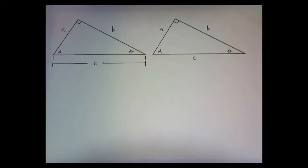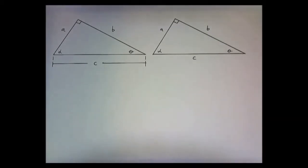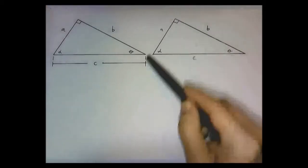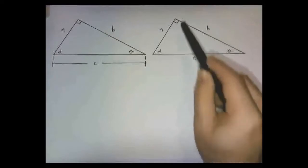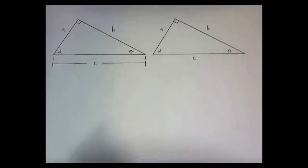Hello! I'm going to show you a proof of the Pythagorean theorem based on the idea of similar triangles. I've drawn two triangles here and they're exactly the same — they have the same sides and the same angles.